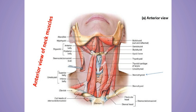Over here, this is the mylohyoid muscle. Above this mylohyoid muscle we have the anterior belly and the posterior belly of the digastric muscle, connected by a pulley on the hyoid bone. When we remove the mylohyoid muscle, we will see two more muscles: the geniohyoid and the stylohyoid.